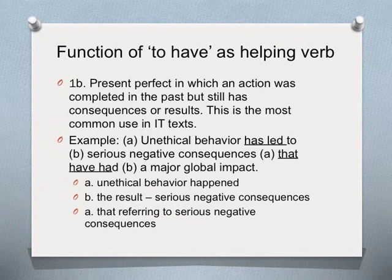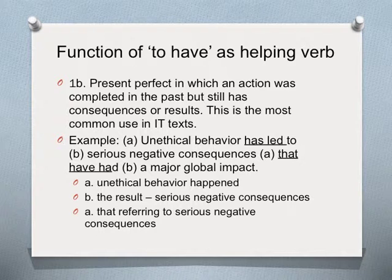The second function of to have as a helping verb is where we want to show an action that was completed in the past but still has consequences or results. This is the most common use of to have in IT texts. For example: unethical behavior has led to serious negative consequences that have had a major global impact. The unethical behavior happened, and the result is still with us — serious negative consequences for the whole world.